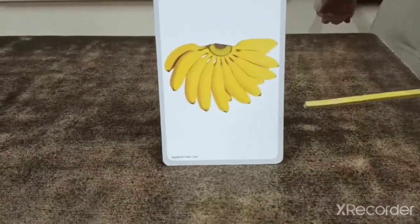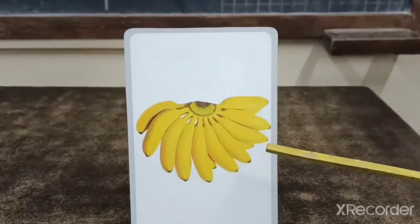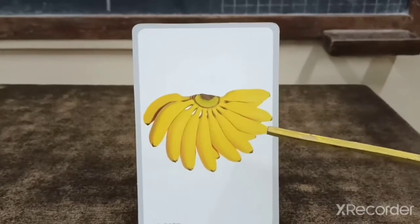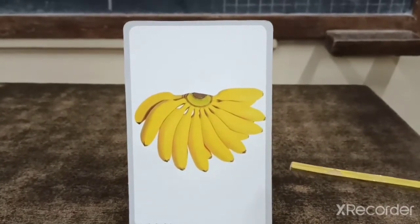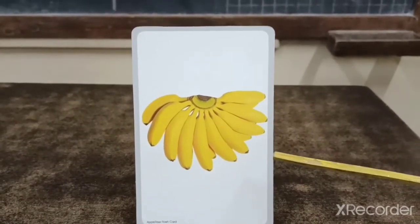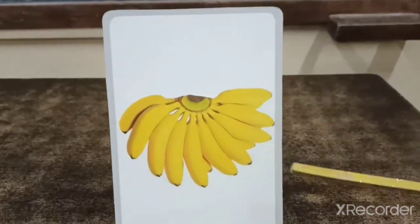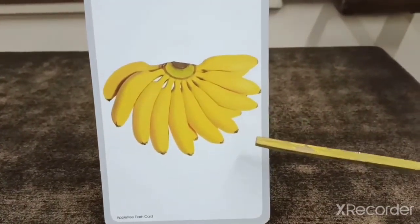So look here. What is this? Yes, this is a bunch of bananas. So banana is which colour? Banana is yellow in colour. So many children like to eat banana.